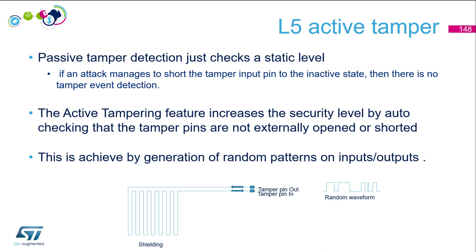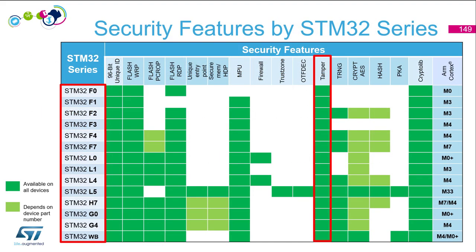For passive tamper, only one pin is needed. For active tampering, you need two pins: a pin out and a pin in. You generate a random waveform on the pin out and check on the pin in that this random waveform is present. This is done automatically by the hardware. Note that active tamper is today only available on the L5.